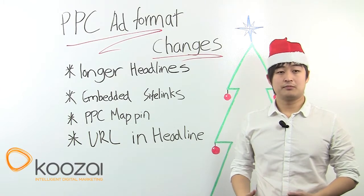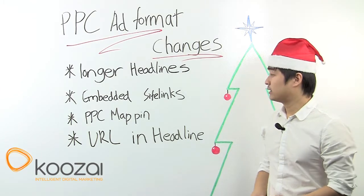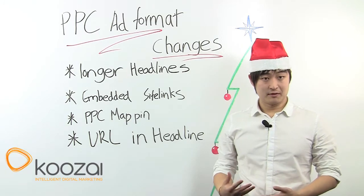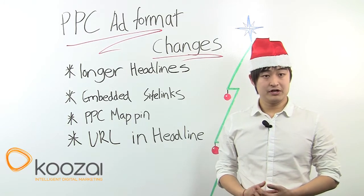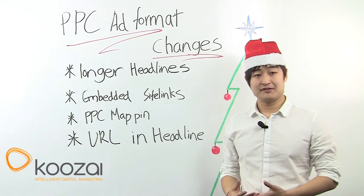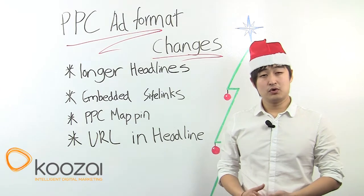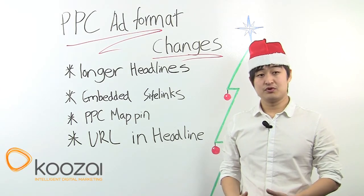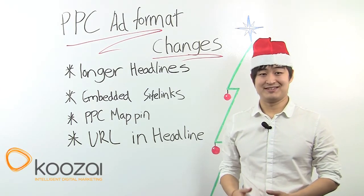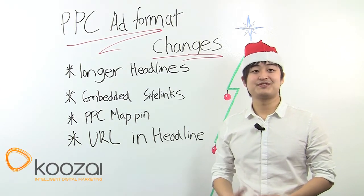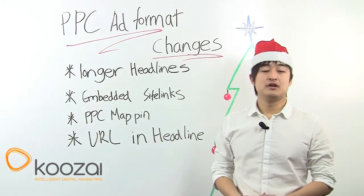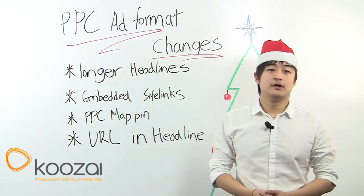First up is the all-important longer headlines update. This means for some ads in the top three, Google will move the first line of your ad description into the headline. Google has said they will do this if your description line appears to be a distinct sentence and ends in proper punctuation, so make sure you put those full stops in.